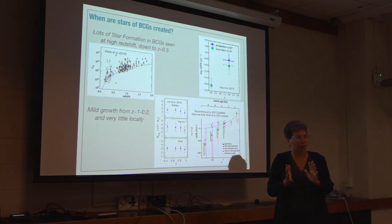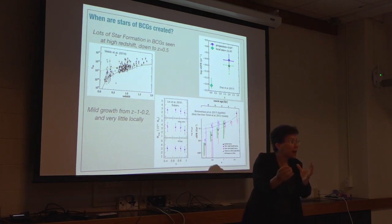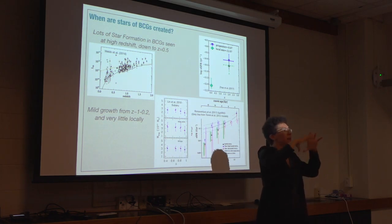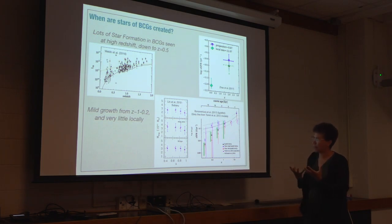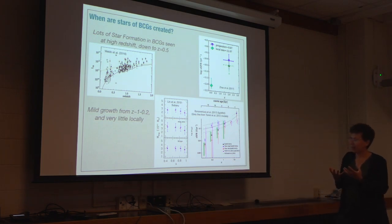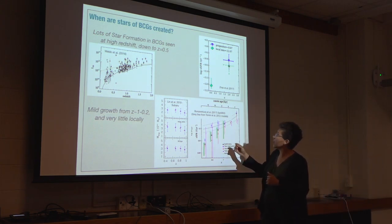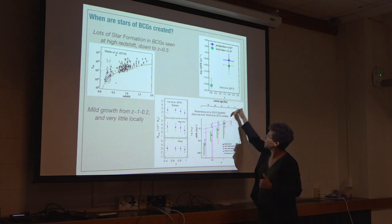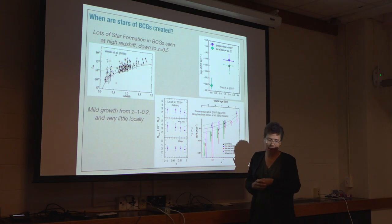When you look at redshift 0.5 or redshift 1 to now, a mild growth is seen. So lots of star formation early on, and then a mild growth in more recent epochs. We're seeing that the star formation rates go down quite heavily and then sort of peter out.